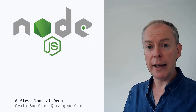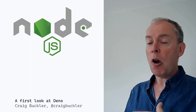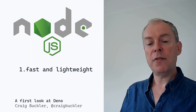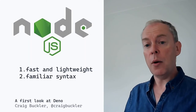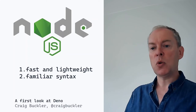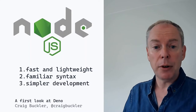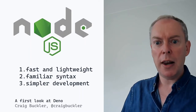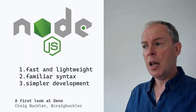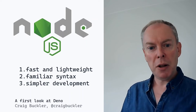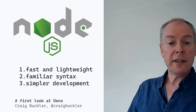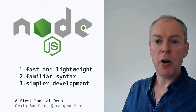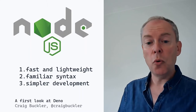Node was released in 2009, and it took the V8 JavaScript engine used in Google Chrome and wrapped it in a C++ container. V8 is very fast and lightweight and highly optimized for runtime scripts. Web developers were already familiar with the JavaScript syntax, so there was less cognitive overload when switching between languages. It simplified some development — you're often transmitting data between two JavaScript engines, which can be easier than parsing it in different data structures for other languages.